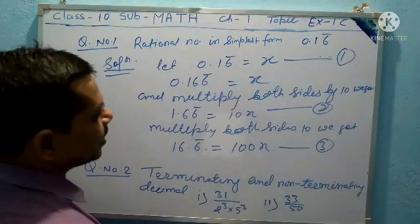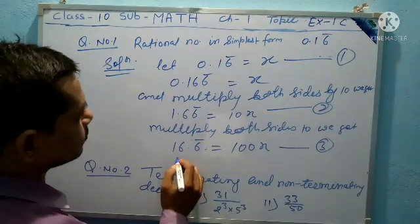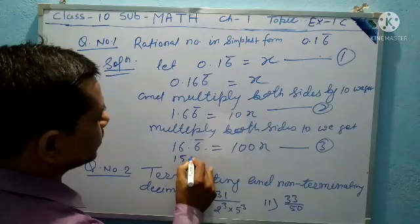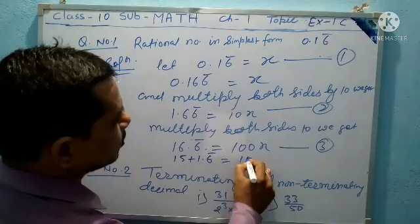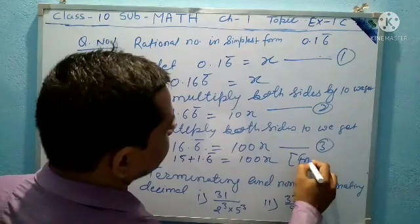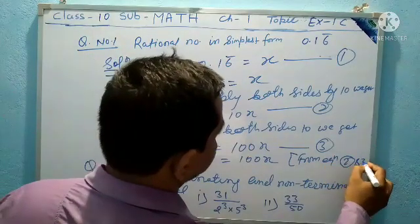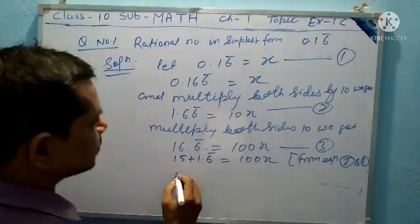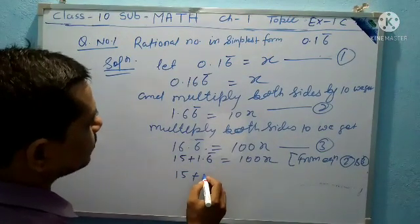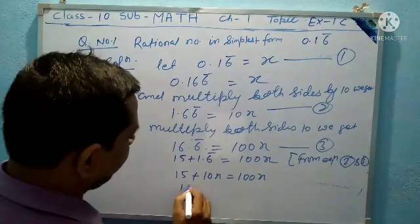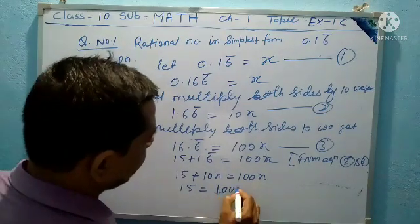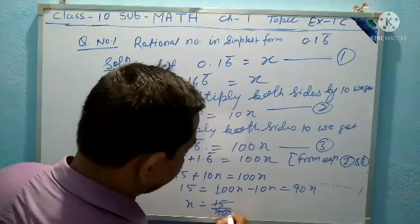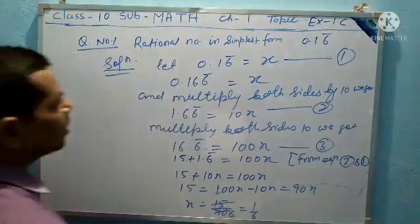Rewriting: 15 plus 1.6 recurring equals 100x. From equations 2 and 3, subtracting: 15 equals 100x minus 10x, equal to 90x. So x equals 15 by 90, that is 1 by 6. That is the rational number.